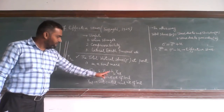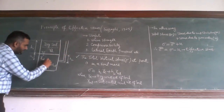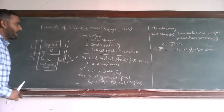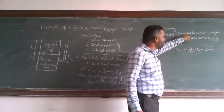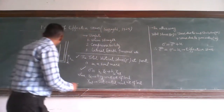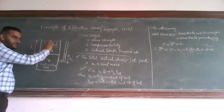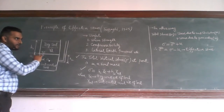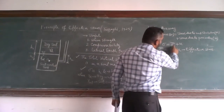Here, gamma-D is the dry unit weight of the soil and gamma-saturated is the saturated unit weight of the soil. So at this point, the soil will experience this total stress. In another way, we can say total stress is equal to stress due to the soil skeleton plus stress due to pore water. The stress at point O is due to both the soil skeleton and the pore water.